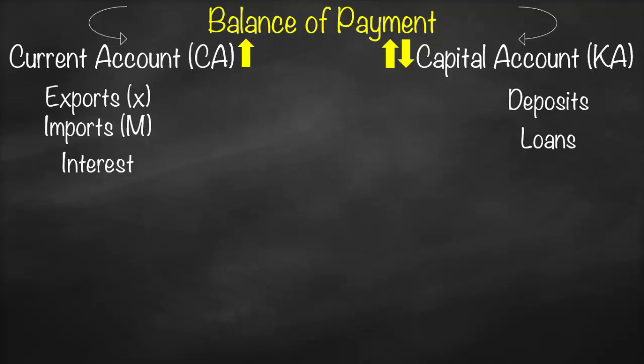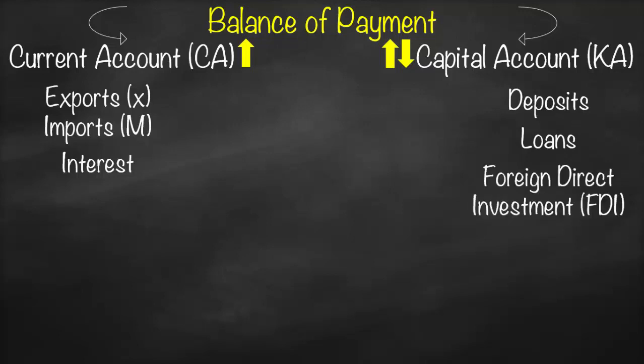If an Australian multinational corporation invests in Italy, that is called foreign direct investment (FDI). After a couple of years the company may sell the project and get its money back to reinvest for higher returns — so FDI is a two-way transaction and is classified under capital account.